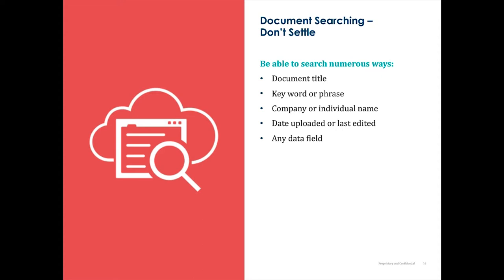Consider how documents are associated or indexed within the platform. Are they organized in a way that makes sense to you? Do you have the ability to associate documents directly to the relevant legal matters, or are they lumped together in one disorganized place? You also need a system that supports all document and file types necessary, not just a few common formats. For document searching, there are solutions that allow you to search by document title, a keyword or phrase, a company or individual name, or even a document upload or edit date.